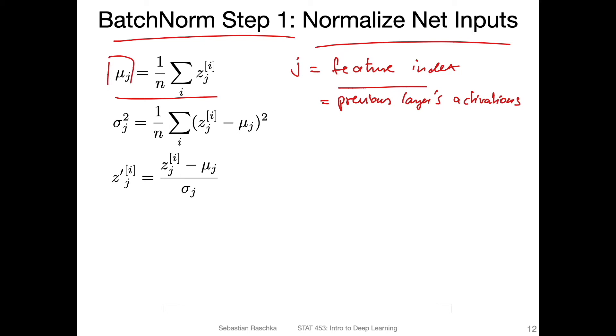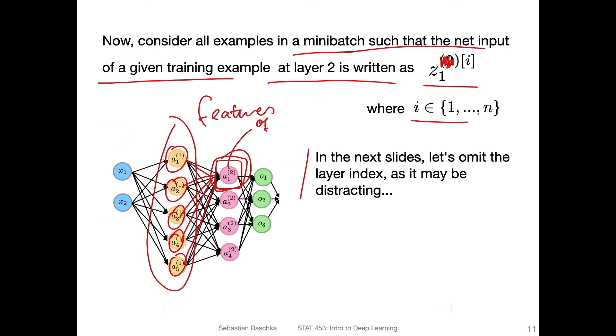So j really is the index over the activations from the previous layer. We can think of it as the feature index, or the previous layer's activations. So we compute from that the mean and the variance. And then we standardize. So this is what we had in a previous video as standardization.